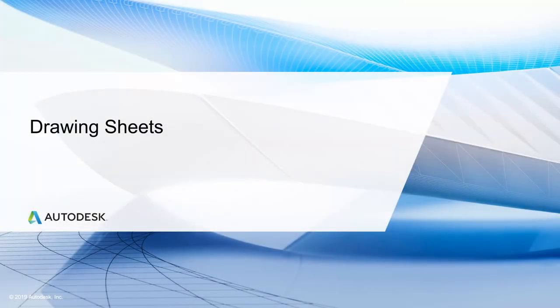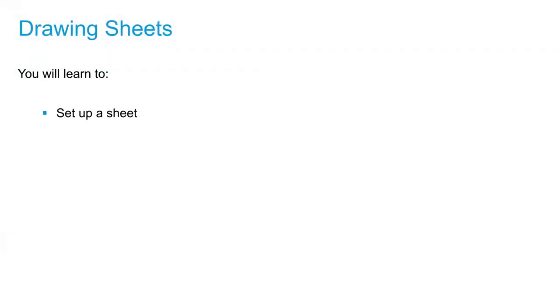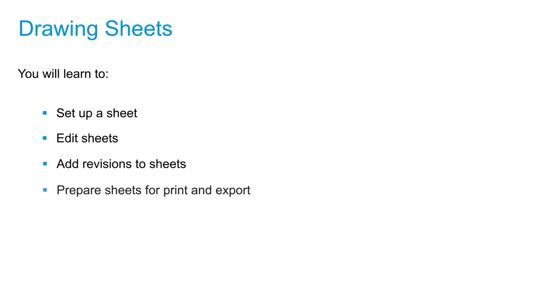Welcome to Lesson 5 of the Certification Prep Course for the Autodesk Certified Professional, Revit for Architectural Design Exam. In this lesson, we will discuss sheets in Revit, exploring how to set up a sheet, how to edit sheets, add revisions to sheets, and prepare our sheets for print and export.